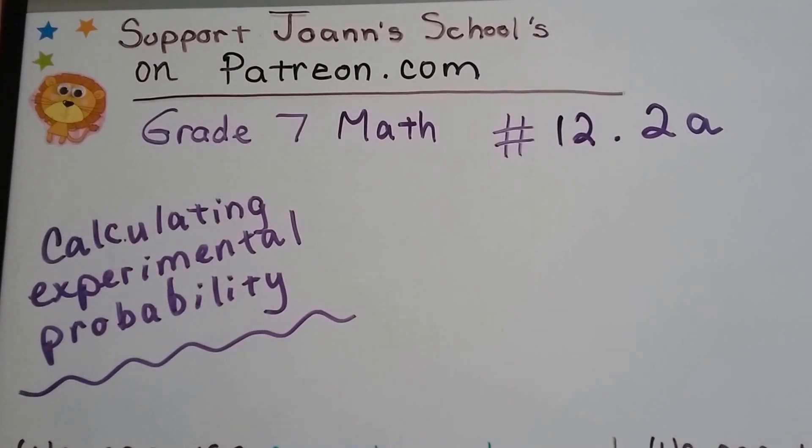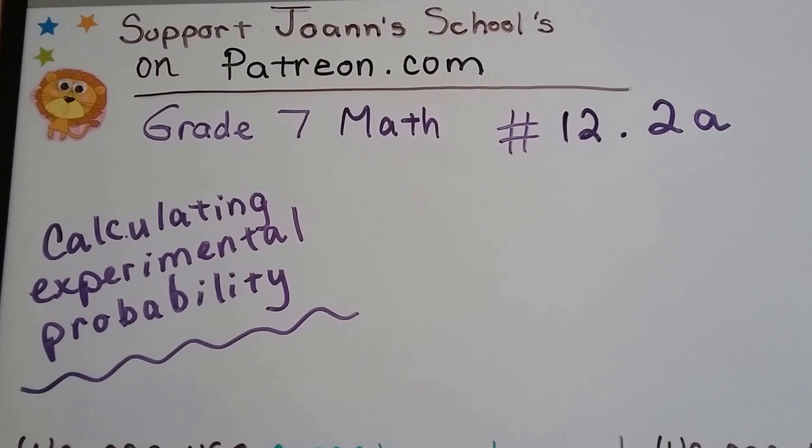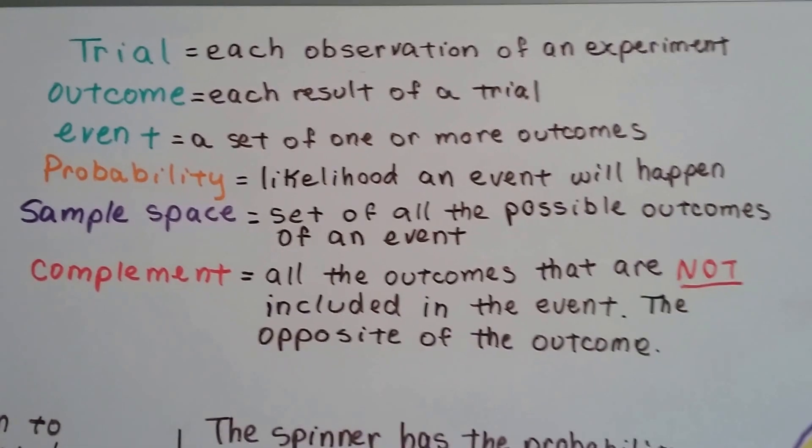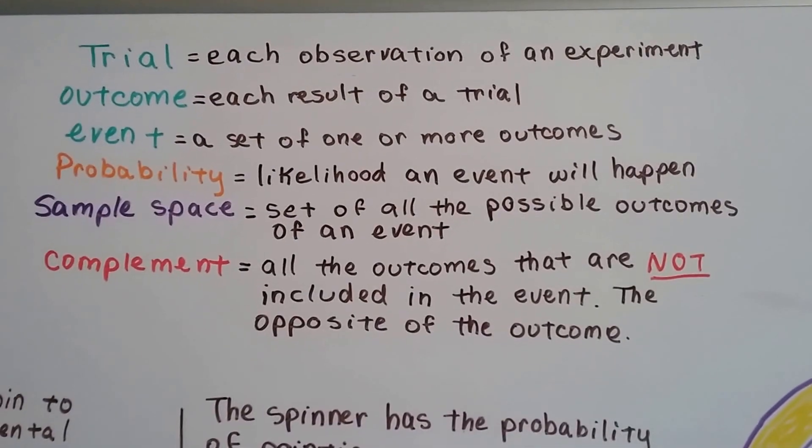Grade 7 math number 12.2a, Calculating Experimental Probability. We're going to do a real quick review of the terms so that you don't get lost, because I know these are new to you.